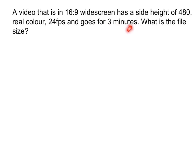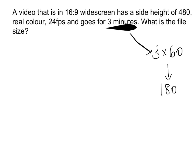We know that it goes for three minutes. And in our formula, we know that we have to convert that three minutes to a number of seconds. So that is three lots of 60, which is 180 seconds. We know the frame rate here is 24 frames per second, where we just leave that as is. So 24 is important.